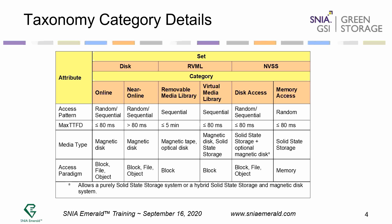In the non-volatile solid-state area, disk access is random or sequential with less than 80 millisecond maximum time-to-first-data. It consists of solid-state storage, or optionally solid-state storage mixed with magnetic disk. When you mix solid-state storage with magnetic disk, that's called a hybrid solid-state storage system. That's where a hybrid system would be classified, and I'll go into more detail on testing that later. It supports block, file, and object storage. In memory access, it's random access using memory access paradigms and solid-state storage.